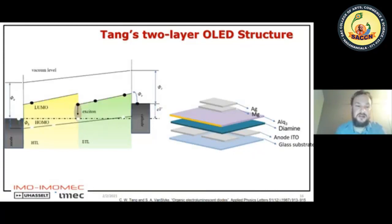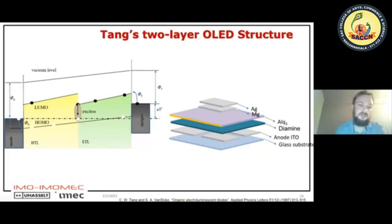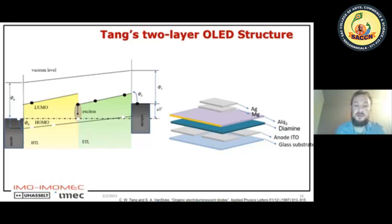You have the anode on one side and cathode on the other side, with a difference in work function. By putting layers in between, if you only put the active material, it would be very difficult for electrons and holes to travel because the energy needed to overcome the interface is quite high. That's why they put hole transport and electron transport layers in between — to ease or smoothen the way electrons and holes travel through the different layers toward each other.